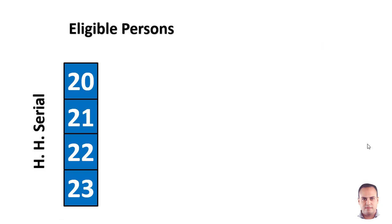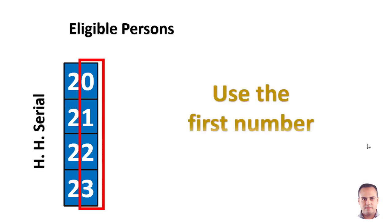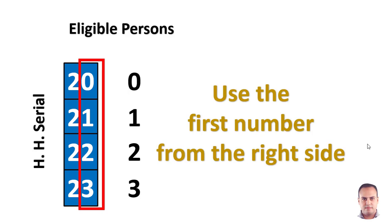What about if we have more than 10? As you know, Kish grid have 10 rows. We have to use the first number from the right side. Zero, one, two, three. I refer to Kish grid.